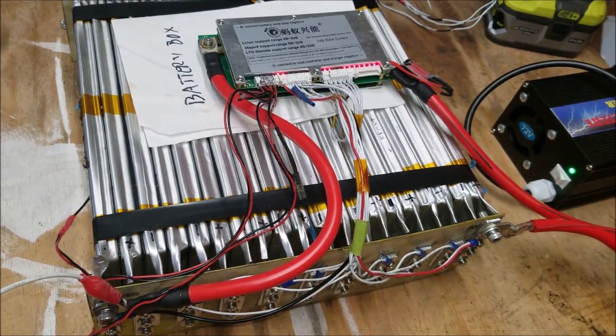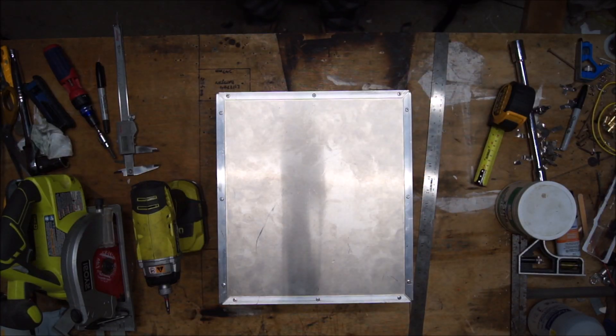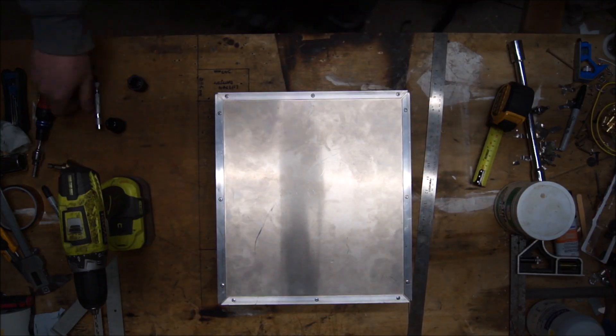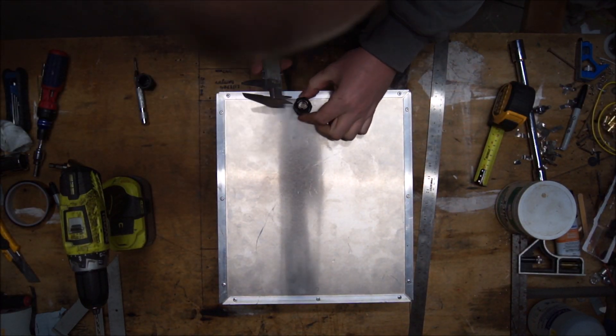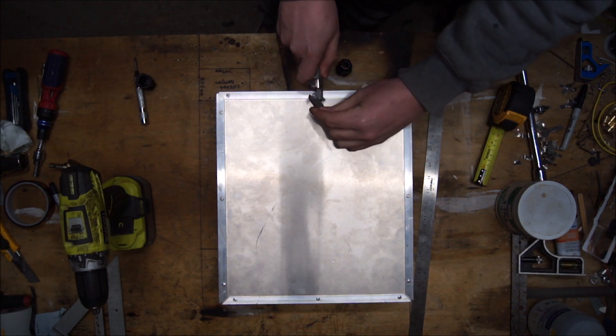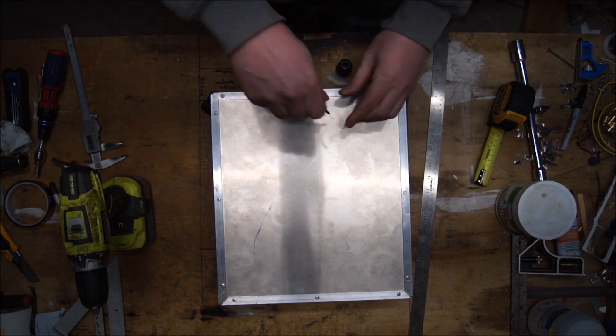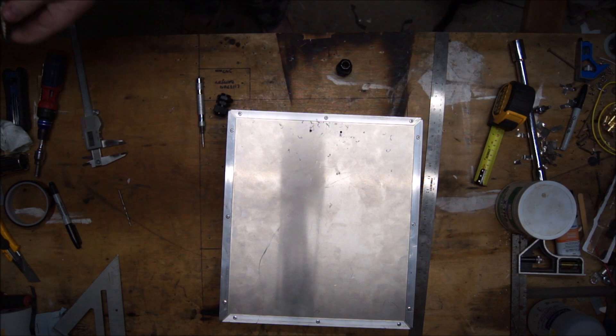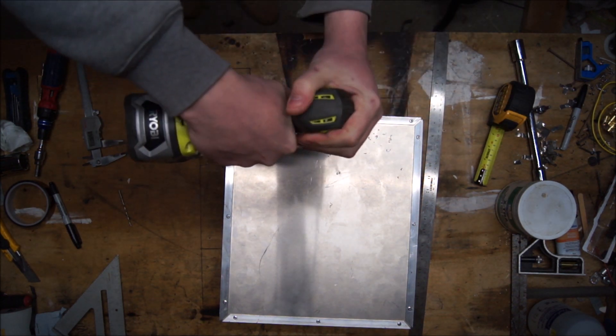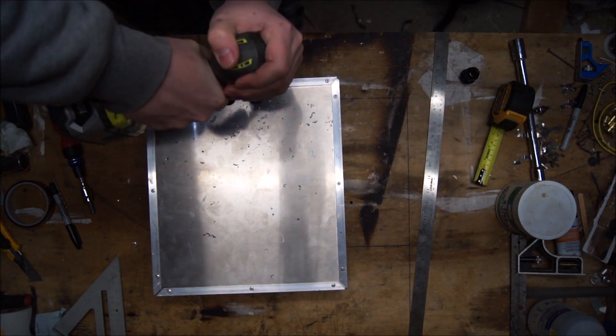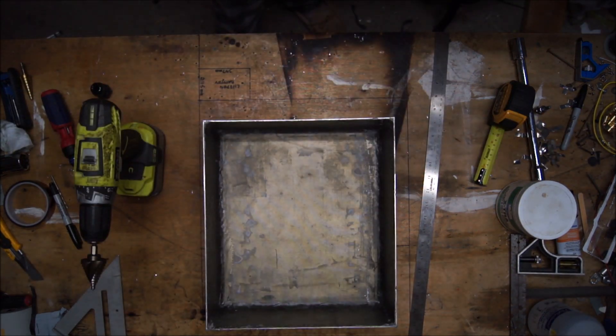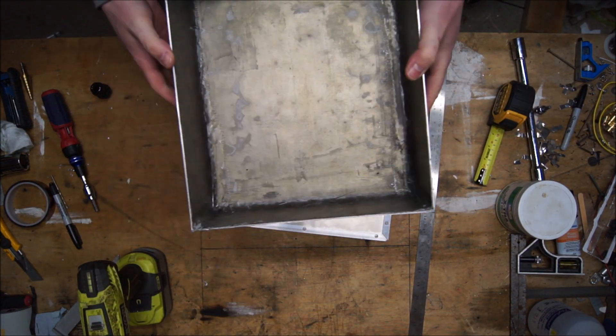Once all the BMS wiring is done, the BMS is installed for a final test. I chose to go with a solid aircraft aluminum case to demonstrate this product. To ensure a waterproof connection, half-inch cable glands were utilized. The inside was coated with three layers of glass fiber and resin to prevent short-circuiting.